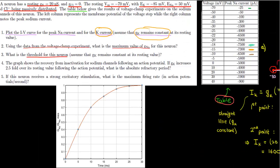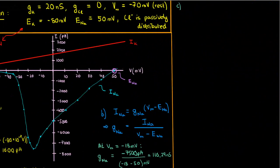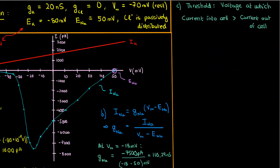In Part C, we have to find the threshold of the neuron. The threshold is the voltage at which the currents going into the cell are larger than the currents leaving the cell. When this happens, the neuron enters a positive feedback cycle where the voltage rises due to net inward current, more sodium channels open, and the voltage continues to rise — leading to an action potential. The currents going into the cell are just the sodium currents (I_Na), and the currents going out are just the potassium current (I_K), because chloride has no conductance and its current is always zero.